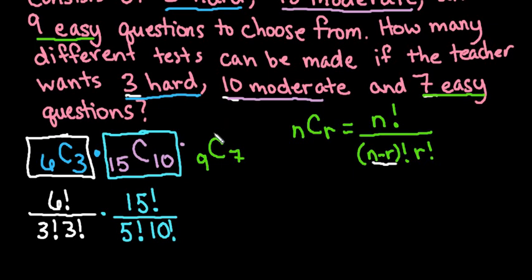And then we would look at the last one. So our last one is 9 things taken 7 at a time. So this would be 9 factorial over 9 minus 7 which is 2 factorial times 7 factorial.